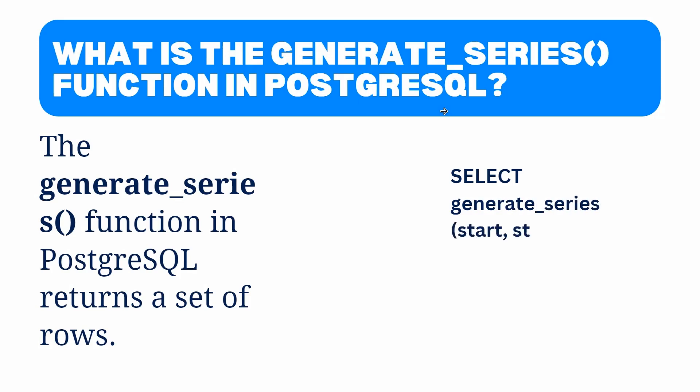So what is the generate_series function in PostgreSQL? generate_series is a built-in function in PostgreSQL that returns a set of rows, where each row contains a single column with a sequential range of values. The function takes two arguments: the starting value and the ending value of the sequence.